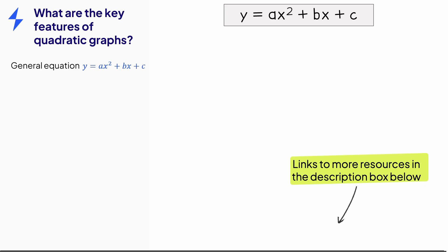The shape of a quadratic graph either looks like a u or an upside down u, and we call this shape a parabola. Which way around the parabola is, is determined by the coefficient of x squared, the a value. If a is positive, then it's a u shape, and if a is negative, then it's an upside down u shape.